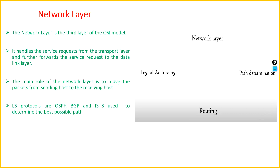The network layer is the third layer of the OSI model. It handles service requests from the transport layer and forwards them to the data link layer. The main role of the network layer is to move packets from the sending host to the receiving host. The protocols used at the network layer are OSPF, BGP, and ISIS — Intermediate System to Intermediate System — and they are used to determine the best possible path.